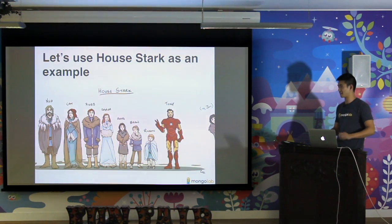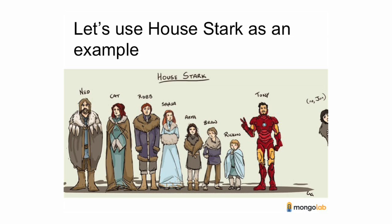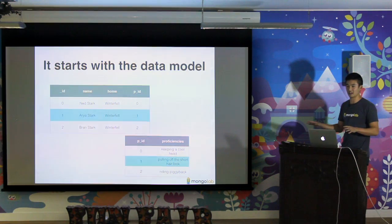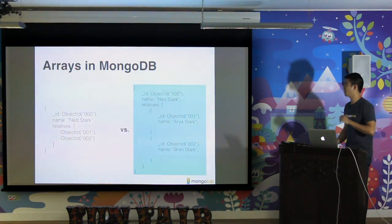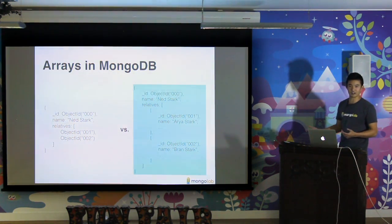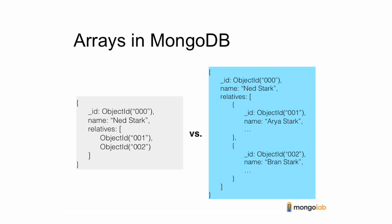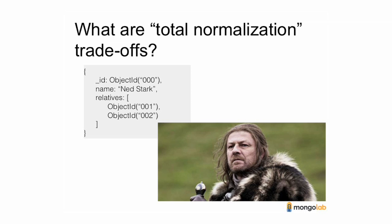We'll use House Stark as an example. I hope you guys like Sean Bean — a few references to Game of Thrones and Lord of the Rings in here. It starts with the data model. For the SQLers in this room, you'll grow to love MongoDB. This is how you're used to doing things in SQL — everything's normalized, you have one table pointing to another table. Then you're introduced to arrays in MongoDB. Here we have an example of complete normalization on the left, slight denormalization on the right. It's a trade-off: how much information do you want to store in these arrays? What are the total normalization trade-offs?